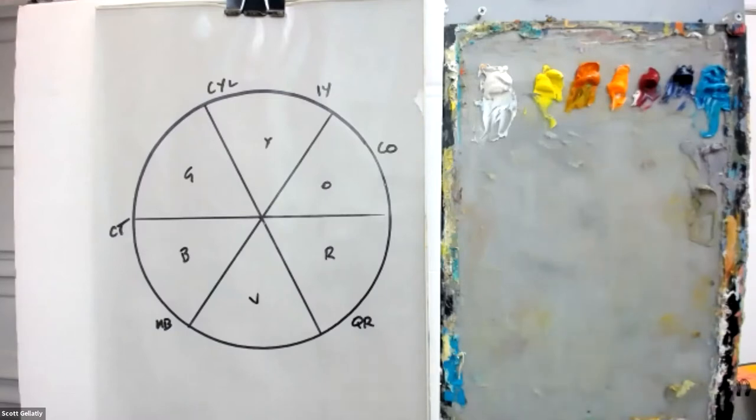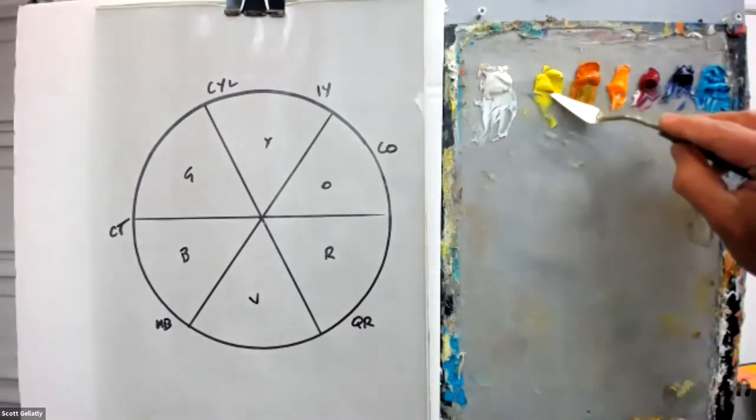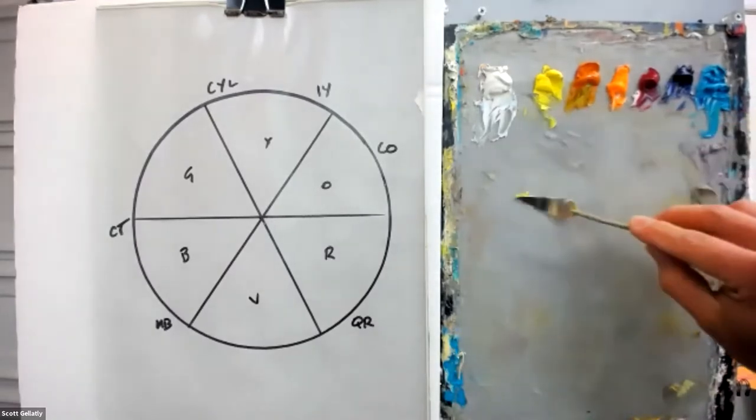What I'm going to demonstrate here is the mixing of greens within this particular palette. But first I want to do a quick demonstration relating to the idea of opacity versus transparency. And I'm going to mix two neutral colors.